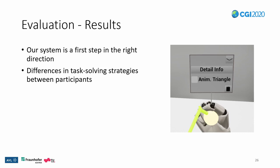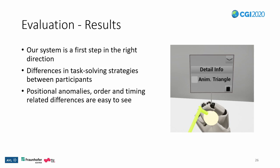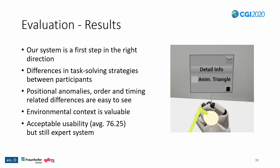For example, participants tended to forget the local interaction, but they were able to solve most tasks regardless. Participants were also able to quickly observe positional anomalies, order, and timing-related differences during exploration, but had to look more closely for more subtle detail. They found the environmental context given by analyzing the data in the environment it was captured in valuable. The usability questionnaire showed an acceptable usability with an average of 76, but the system is still to be considered an expert system.